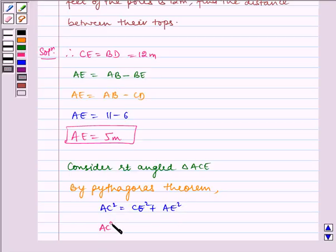That is, AC squared equals CE squared, which is 12 squared, plus AE squared, which is 5 squared.